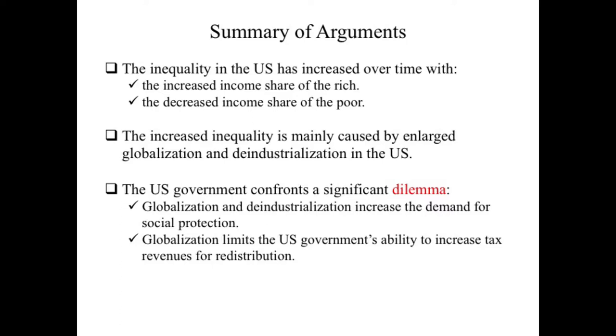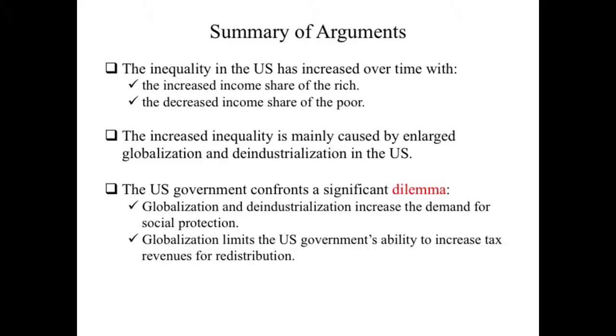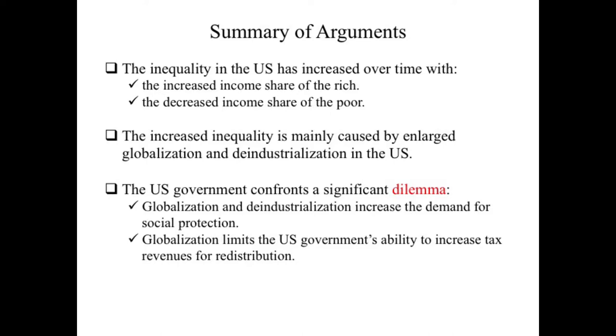Inequality in the United States has increased over time, with the increased income share of the rich and decreased income share of the poor. The increased income inequality is mainly caused by enlarged globalization and deindustrialization in the United States. US governments, under this increased inequality with globalization and deindustrialization, confront a significant dilemma. Globalization and deindustrialization increase the demand for social protection. However, globalization also limits the US government's ability to increase tax revenues for redistribution.